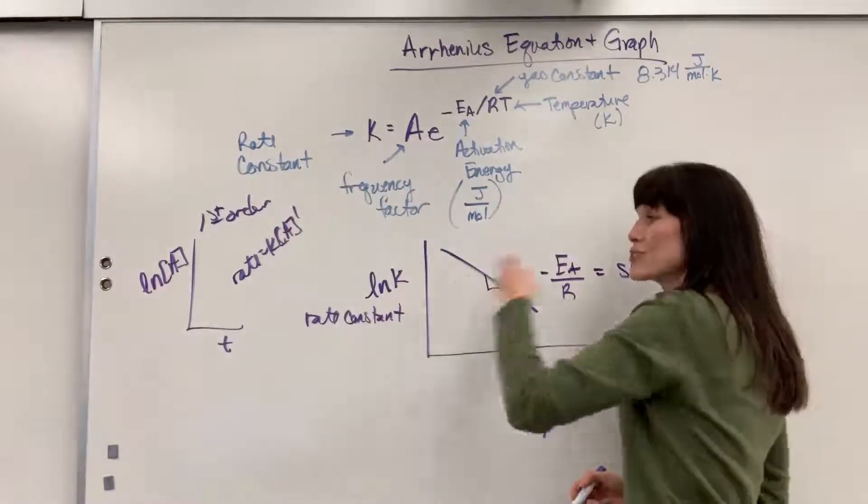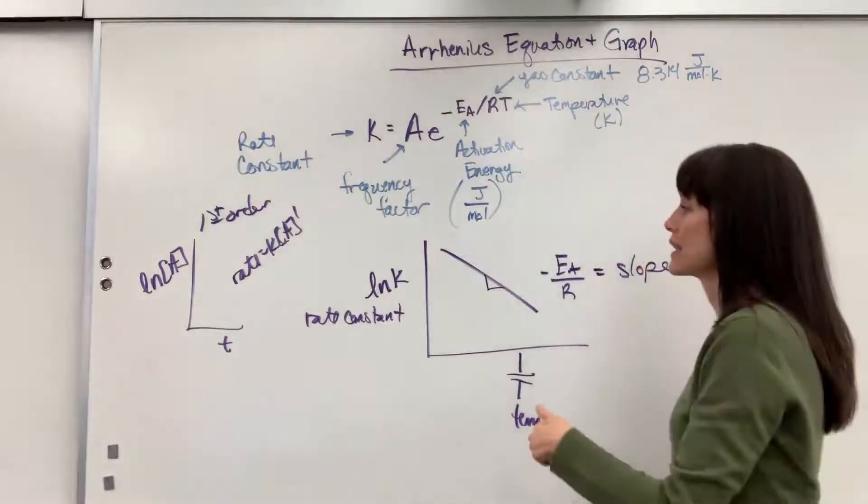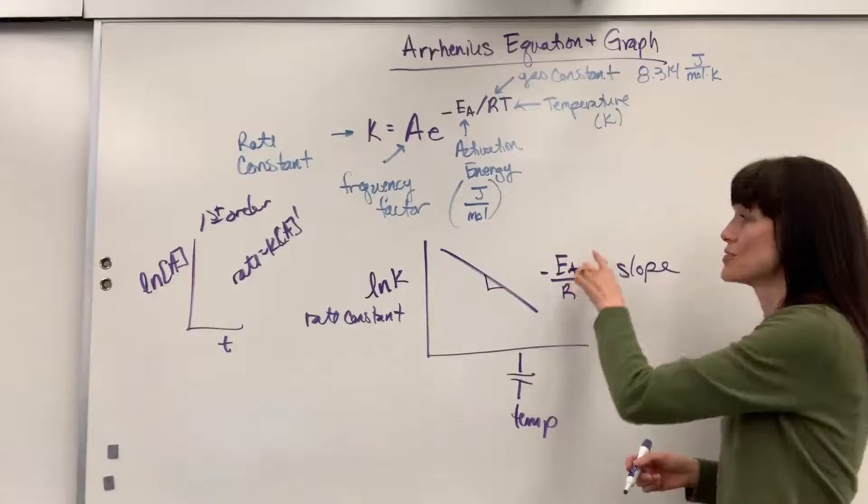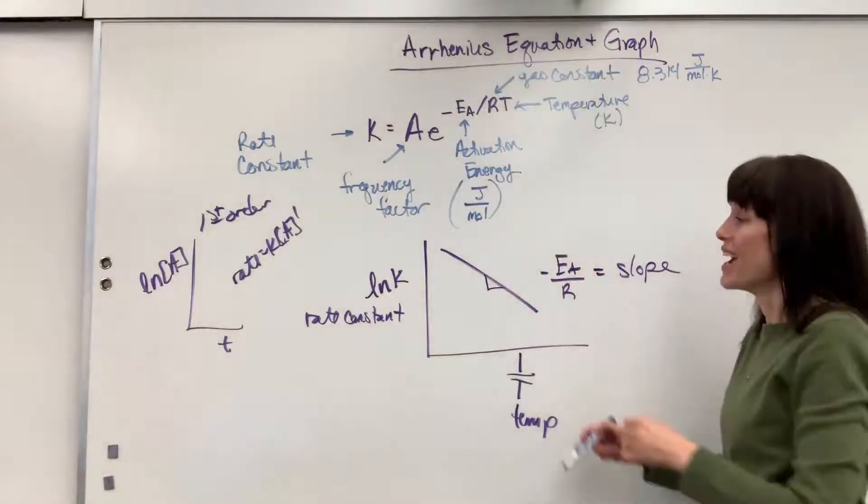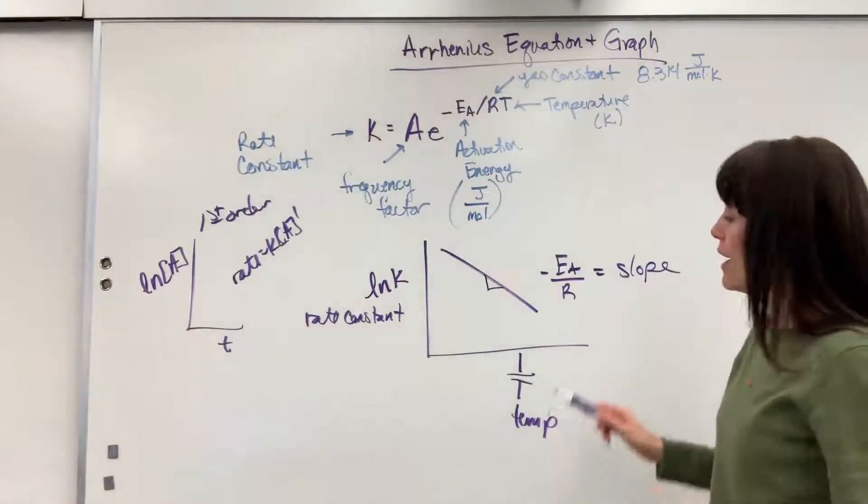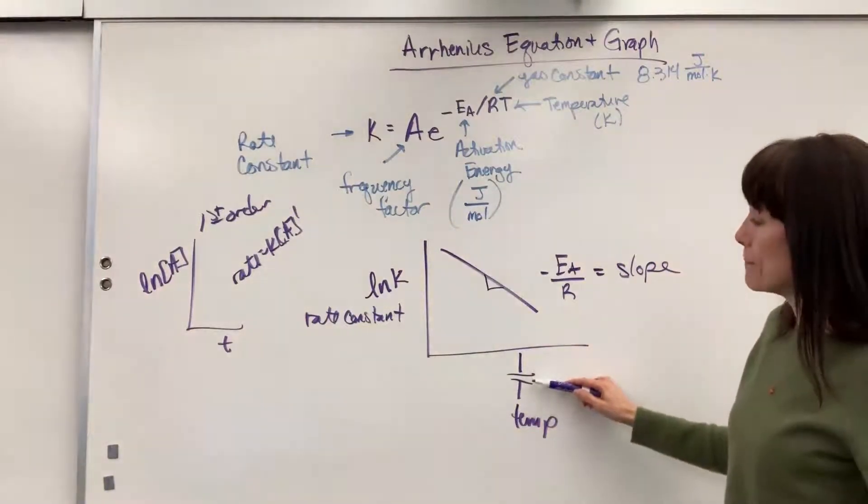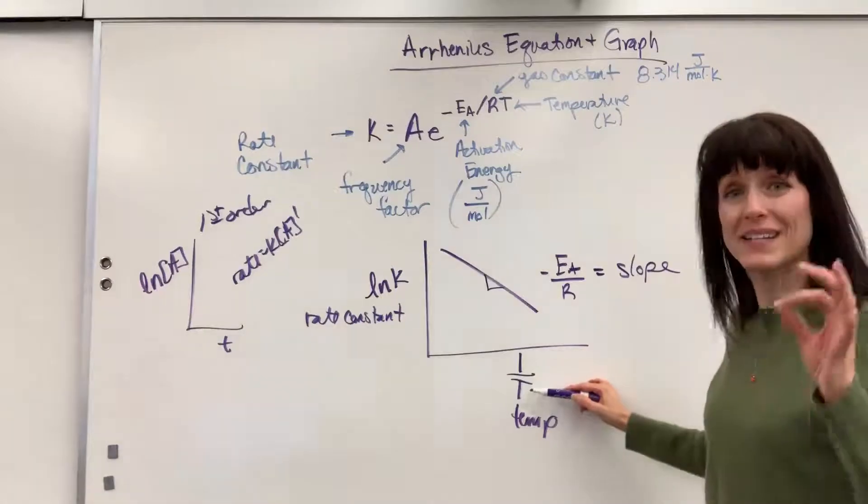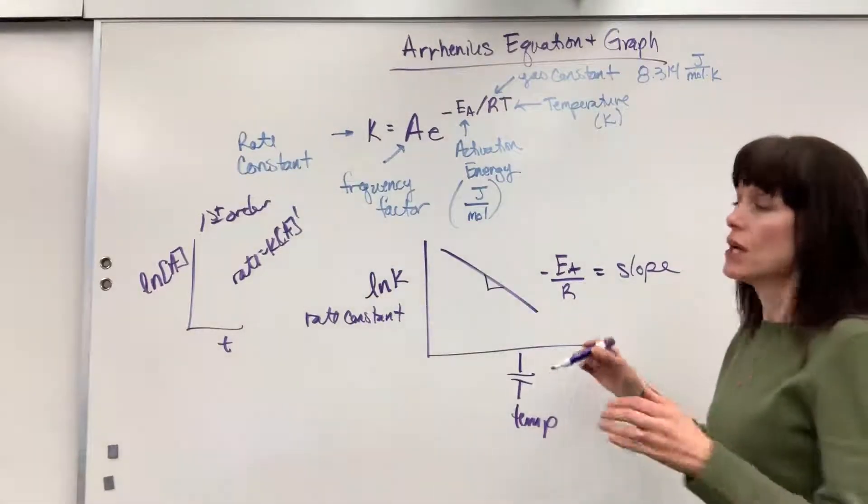Whereas, when you have natural log of K, we are relating the rate constant to activation energy. And here, the slope is negative Ea over R. Just have that memorized straight up. And this is the axis one over big T temperature.